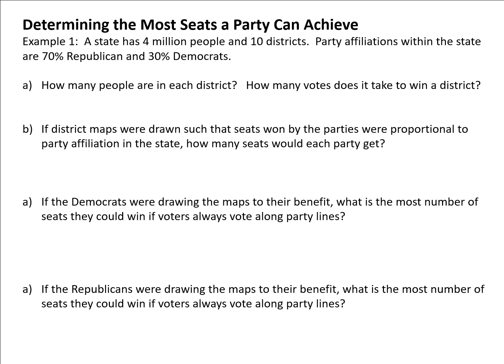Let's look at a couple of examples where we determine the most seats a party could achieve. We'll look at both parties and see how that would affect the numbers — whether the Democrats were gerrymandering or the Republicans were gerrymandering. Example one: a state with 4 million people in 10 districts, with party affiliations of 70% Republican and 30% Democrat.